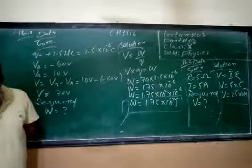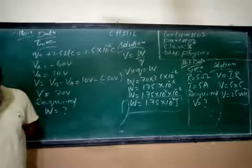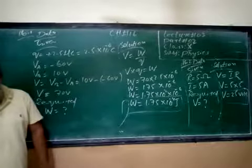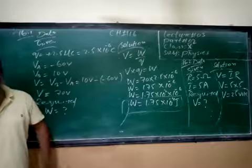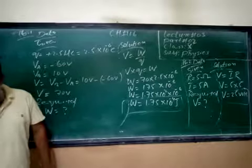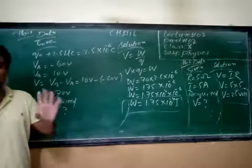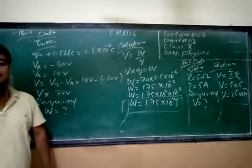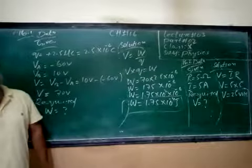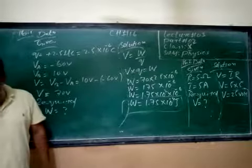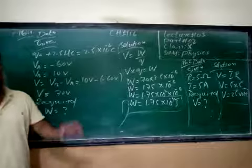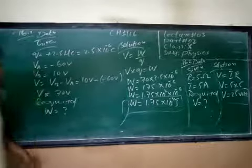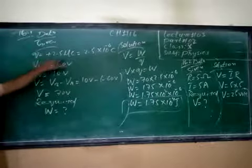Calculate the amount of work done in carrying a charge of plus 2.5 microcoloumb from point A to point B. Point A is at a potential of minus 60 volts. Point B is at plus 10 volts. So the charge equals plus 2.5 microcoloumb.